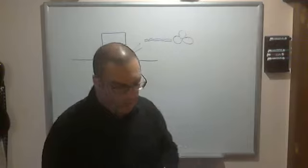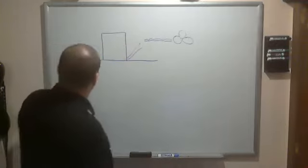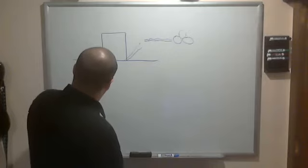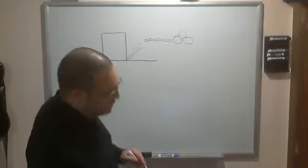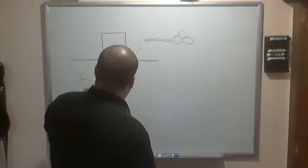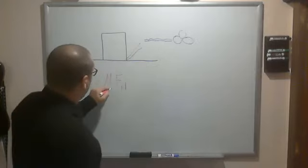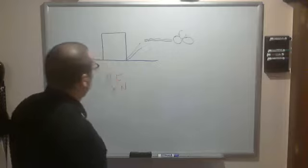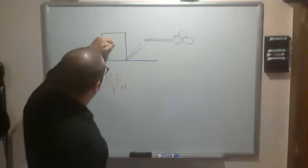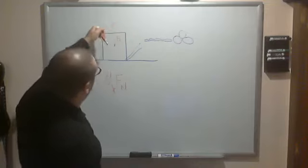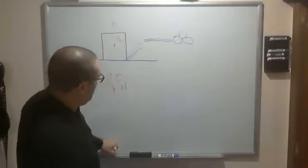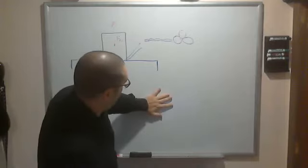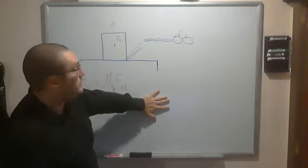The force of friction depends on really two quantities: it depends on the normal force and a coefficient in front of the normal force — I'll put a subscript K here. The normal force tells us how hard one object, say the table, pushes on the other. So when I push my hand on here, there's some force I'm pushing on the board — that's the normal force.